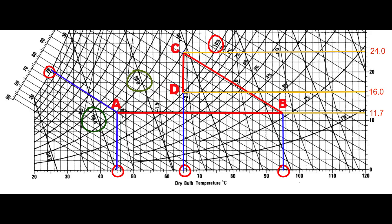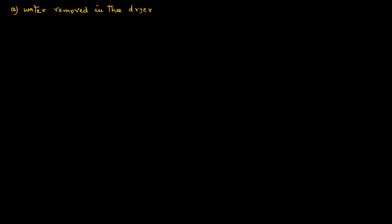We will use these values to make calculations for part A and part B. First we want to determine the water removed in the dryer, which is the B to C process. The humidity ratios are 11.7 for B and 24 for C, so the water removed in the dryer is 24 minus 11.7, which equals 12.3 grams of water per kilogram of dry air.